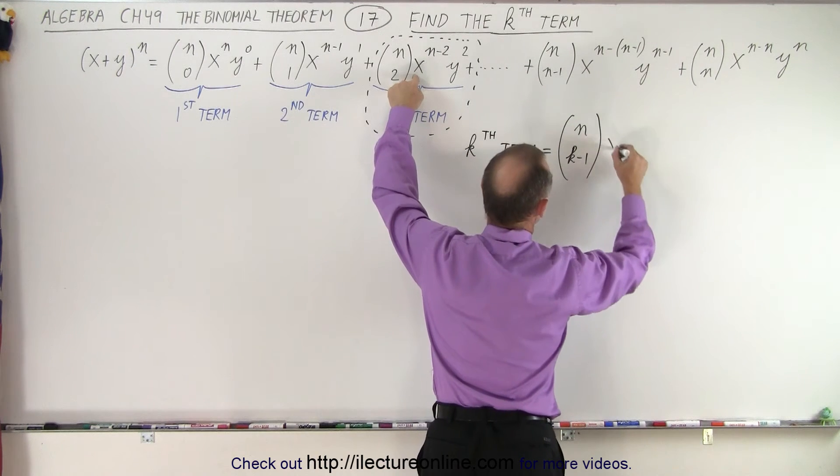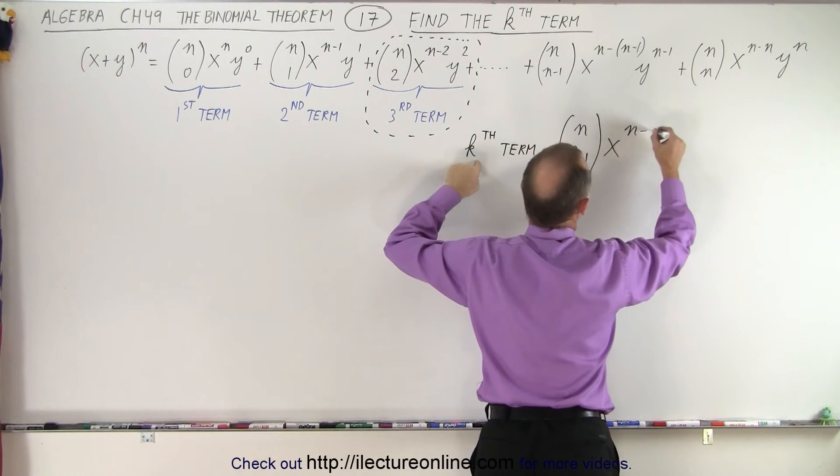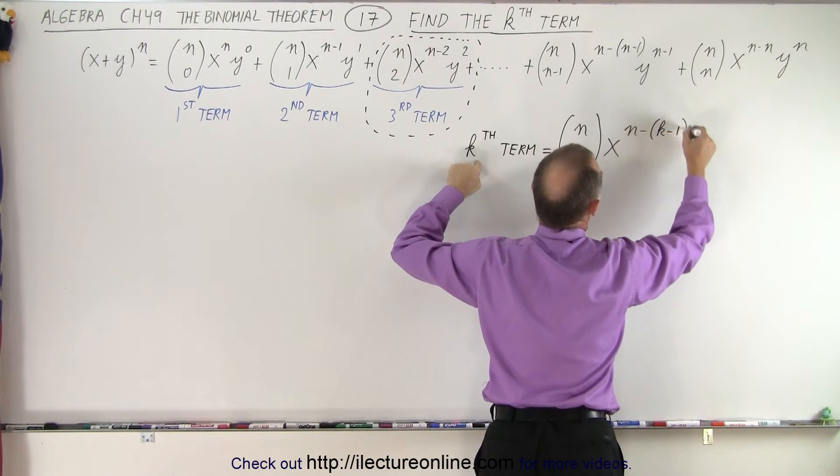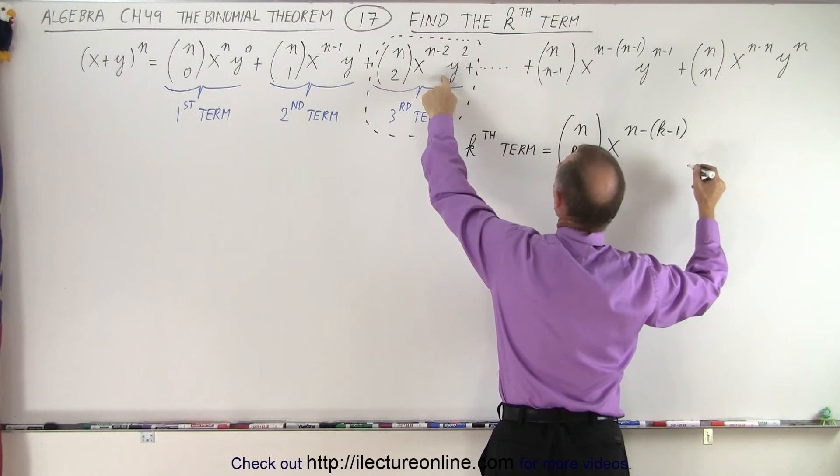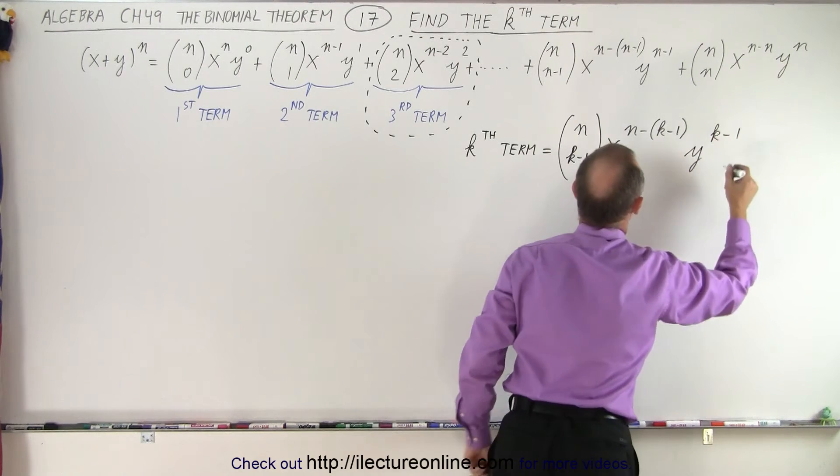Then we have x to the power of (n minus k plus 1), and then the second term would be y^(k-1).